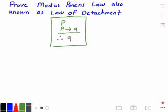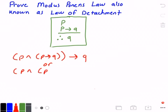Another way of writing this as its corresponding tautology would be as follows: We would have P and P implies Q implies Q.